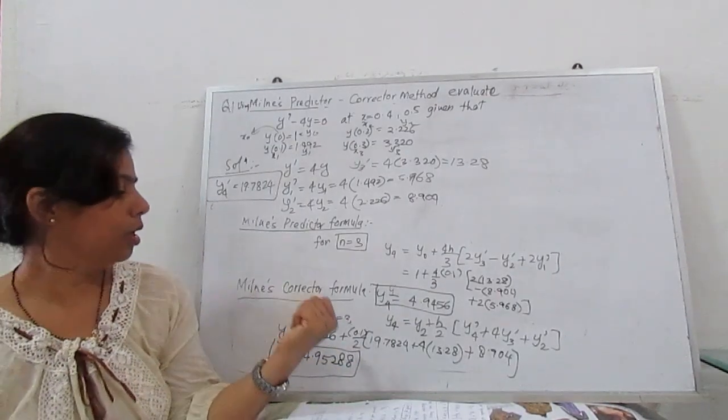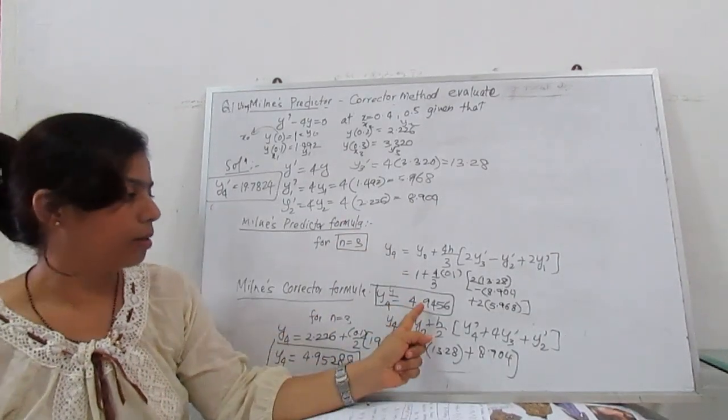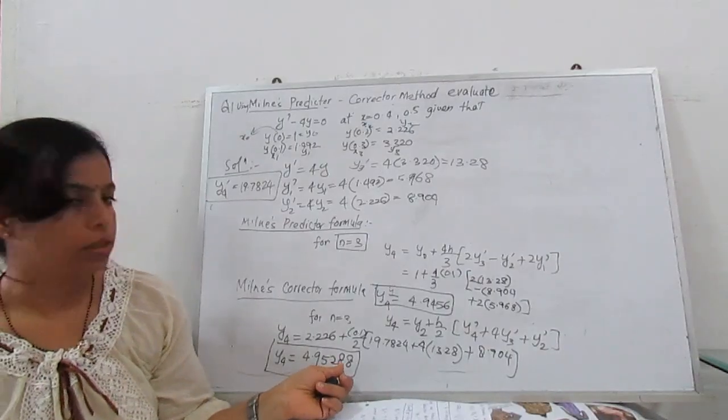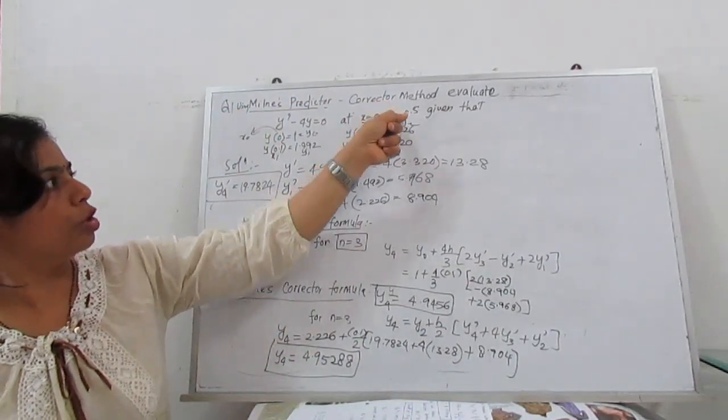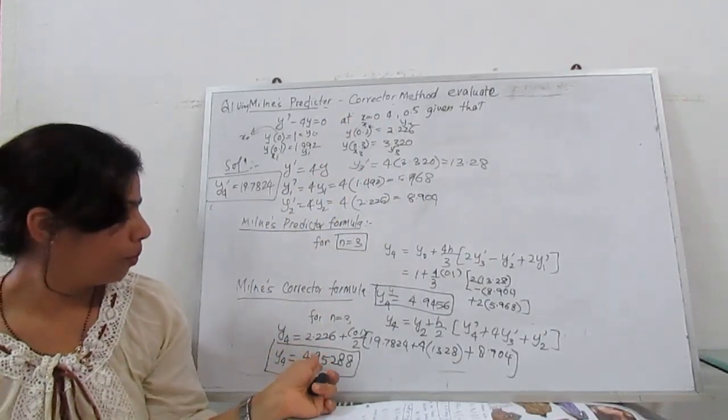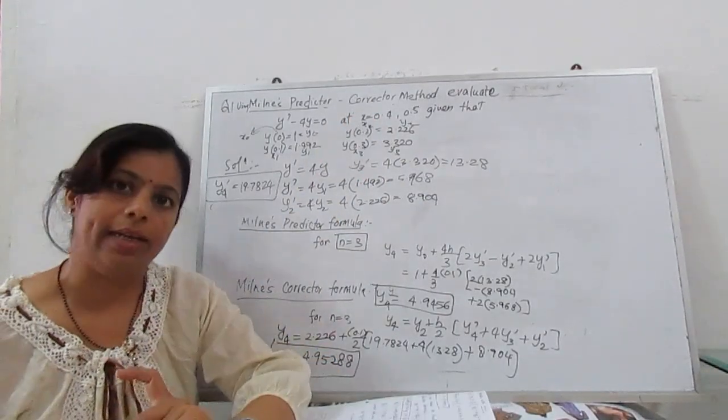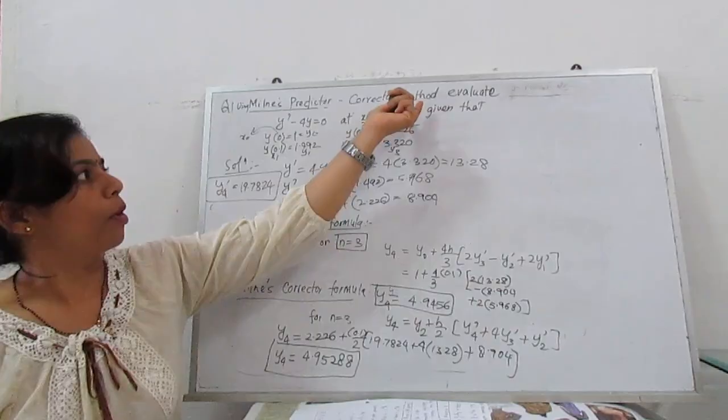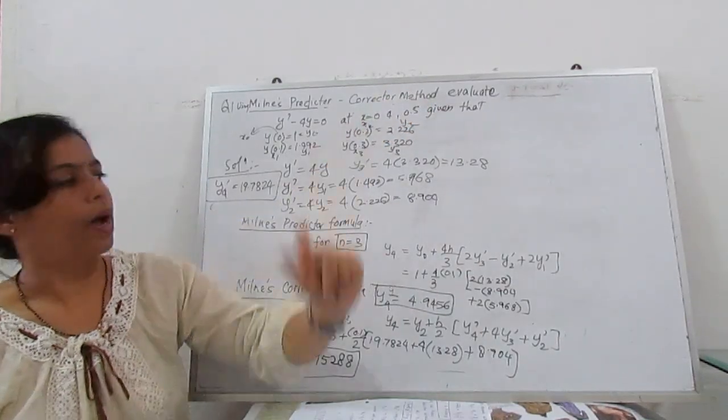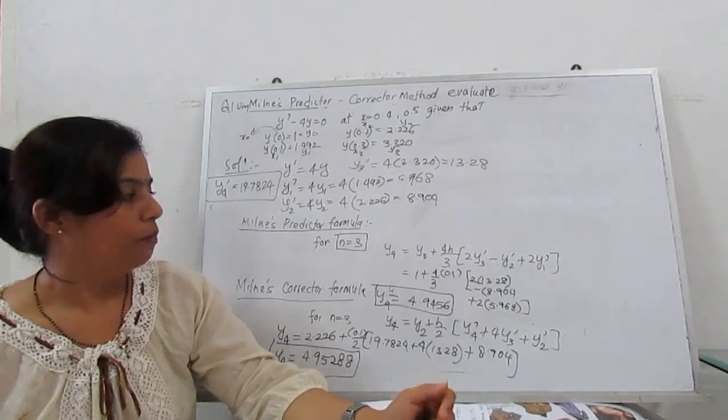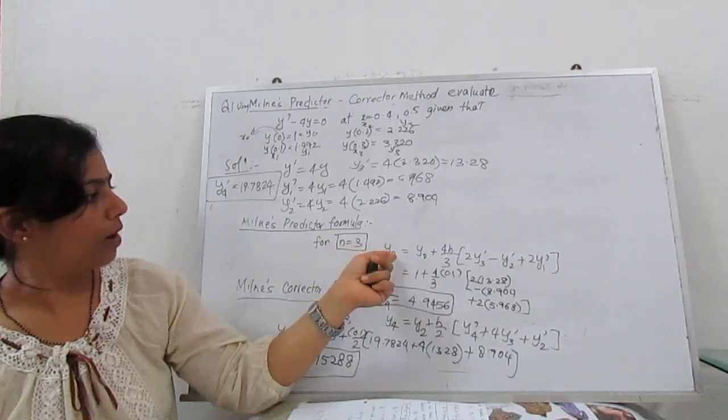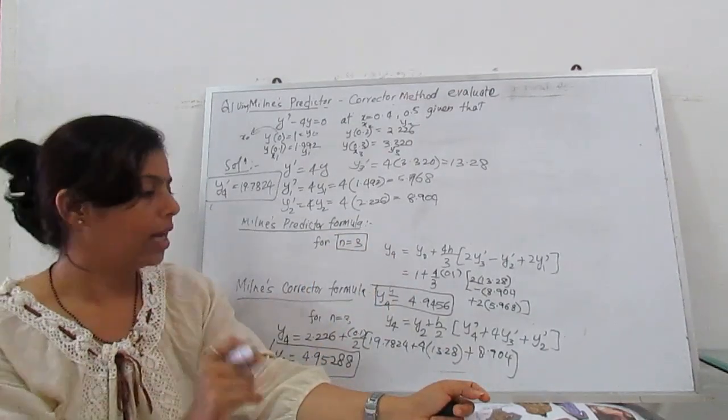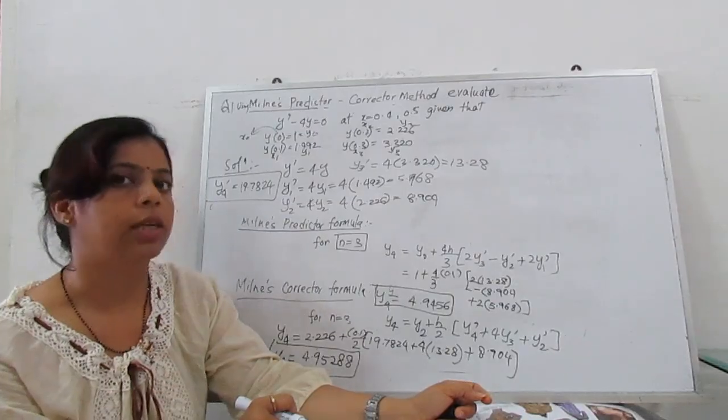So this is the value of y₄: first with predictor formula, second with corrector formula, and that is the final value. At x = 0.4, y₄ is 4.95288. This is the process of Milne predictor and corrector method. Next our point is 0.5. Same process we have to use. For 0.5, we are finding y₅, where n = 4.